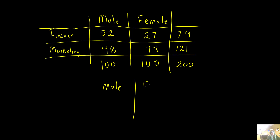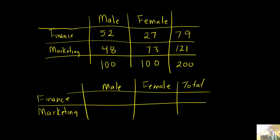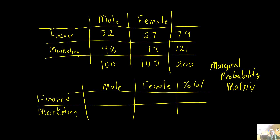Your table looks the same as far as male, female, finance, and marketing. We'll still have our totals here. When I want to do a marginal probability matrix, I'm finding the joint probabilities. So the first one is the probability that they're male and in finance. If I look up here, that would be 52 out of 200 total. I put 52 out of 200 in my calculator and I get 0.26.